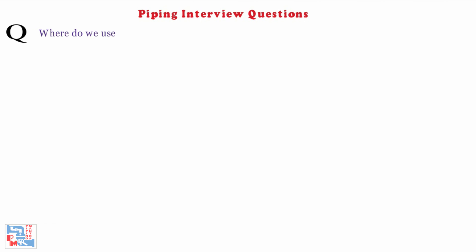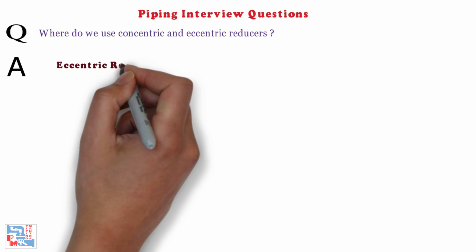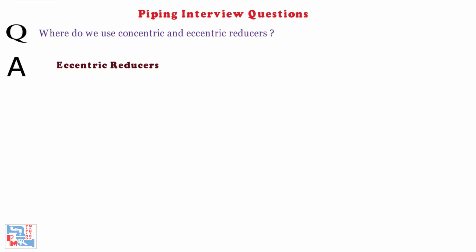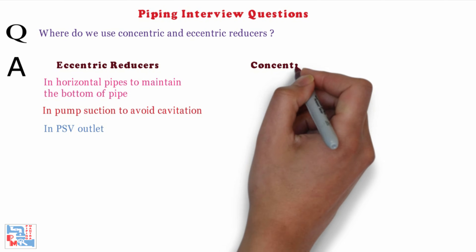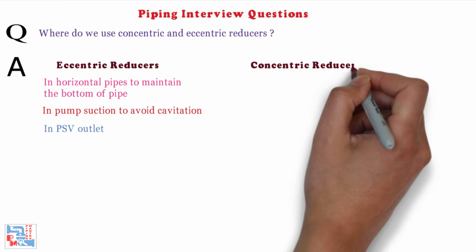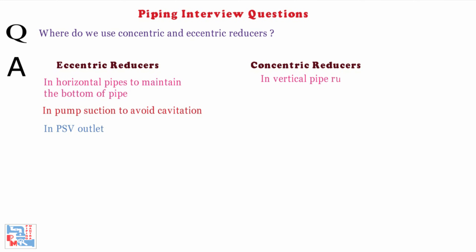First, where do we use concentric and eccentric reducers? Normally, we use eccentric reducers in horizontal pipes to maintain the bottom of pipe, in pump suction to avoid cavitation, and in PSV outlet. We use concentric reducers in vertical pipe runs, pump discharge, and PSV inlet.